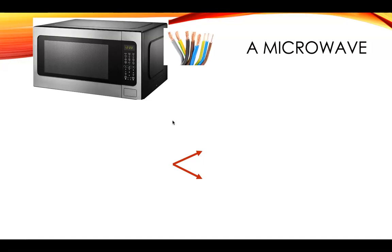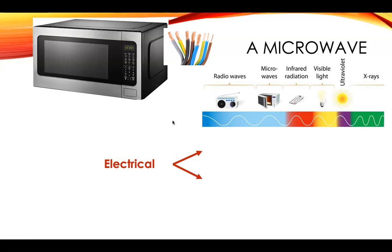For a microwave, you have to plug it in. So it starts with electrical energy. And microwaves are on the electromagnetic spectrum, which means radiant energy. And it heats up the food inside, so produces heat.